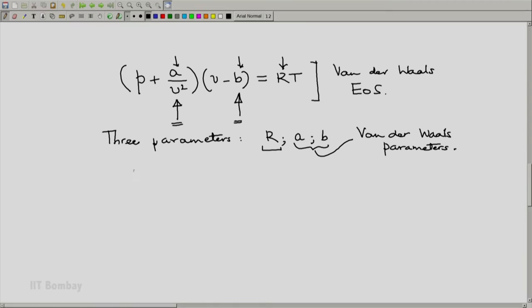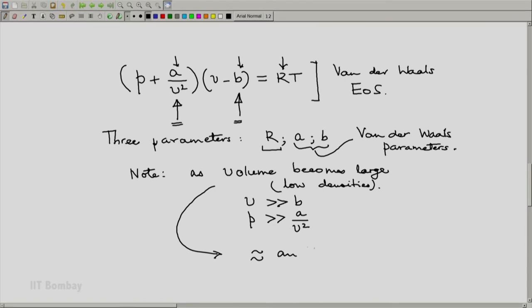Notice that as volume increases, that means low densities, V will become much larger than B. Similarly, P will turn out to be much larger than A by V square. And under these conditions, the equation of state will approximate an ideal gas equation of state.